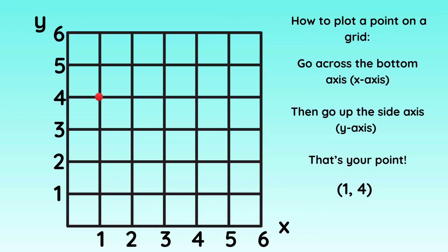So here we have our grid. How to plot a point on a grid: go across the bottom axis first, known as the x-axis, then go up the side axis, known as the y-axis, and that's your point. A good way to remember this is you go across the hole first before you go up the stairs. So across and up.